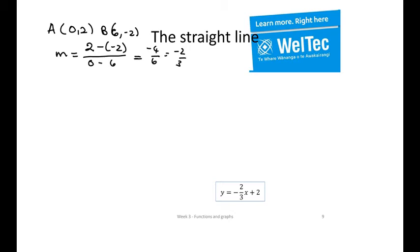We can actually figure out what is the vertical intercept. The vertical intercept, if you remember, is where x is equal to 0. And we're given that point. We're actually given the point where x is equal to 0. So our vertical intercept then is y is equal to 2. Putting all that together, then y is equal to negative 2 thirds x plus 2.